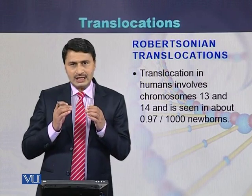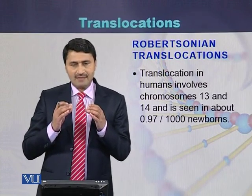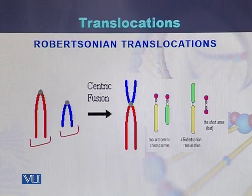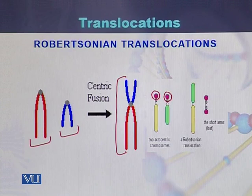Robertsonian translocation is seen in approximately one out of every thousand newborns. With the help of diagrams, we can see two acrocentric chromosomes. As a result of translocation or fusion, they join with each other and form one single chromosome. The small fragments of DNA are deleted and as a result of translocation the large fragments join with each other.